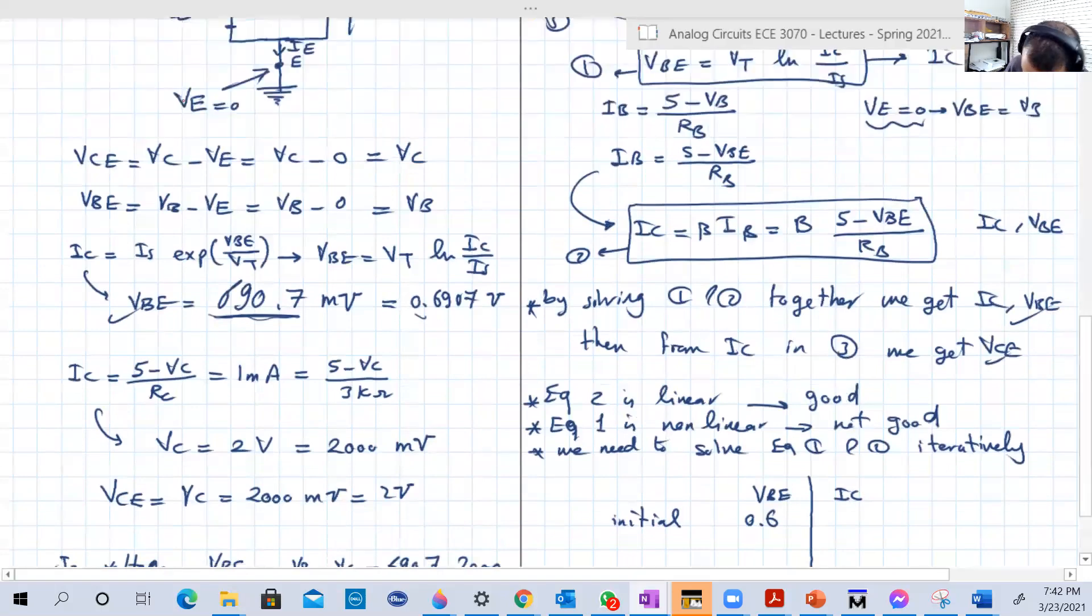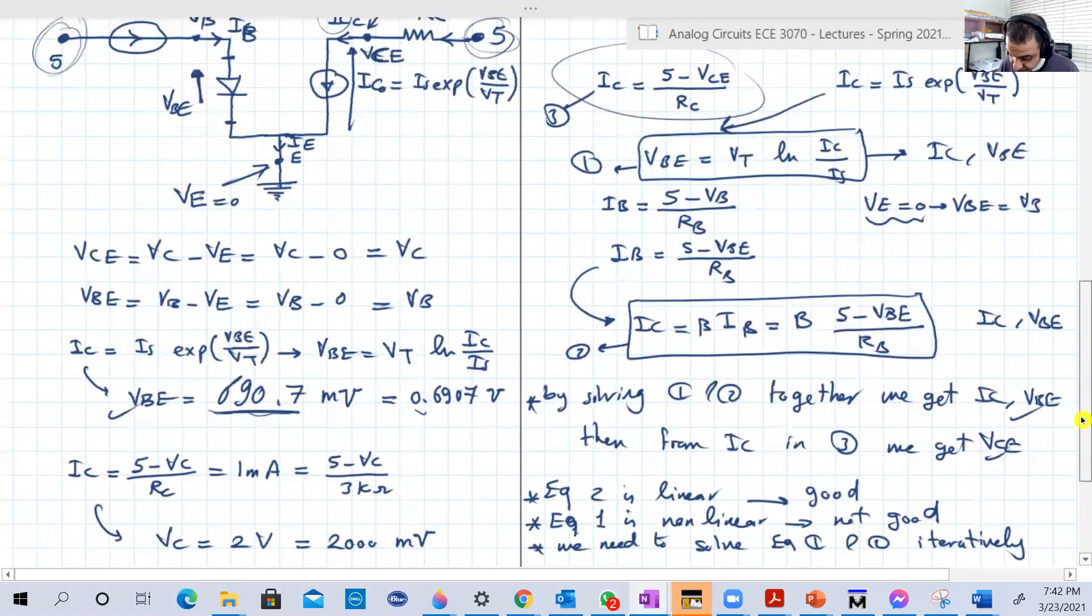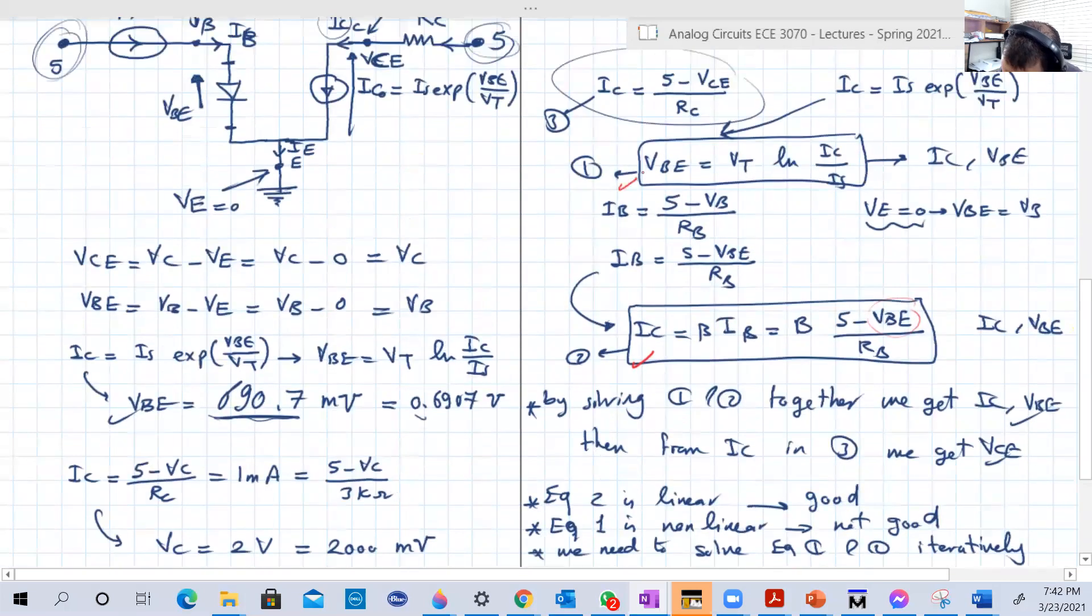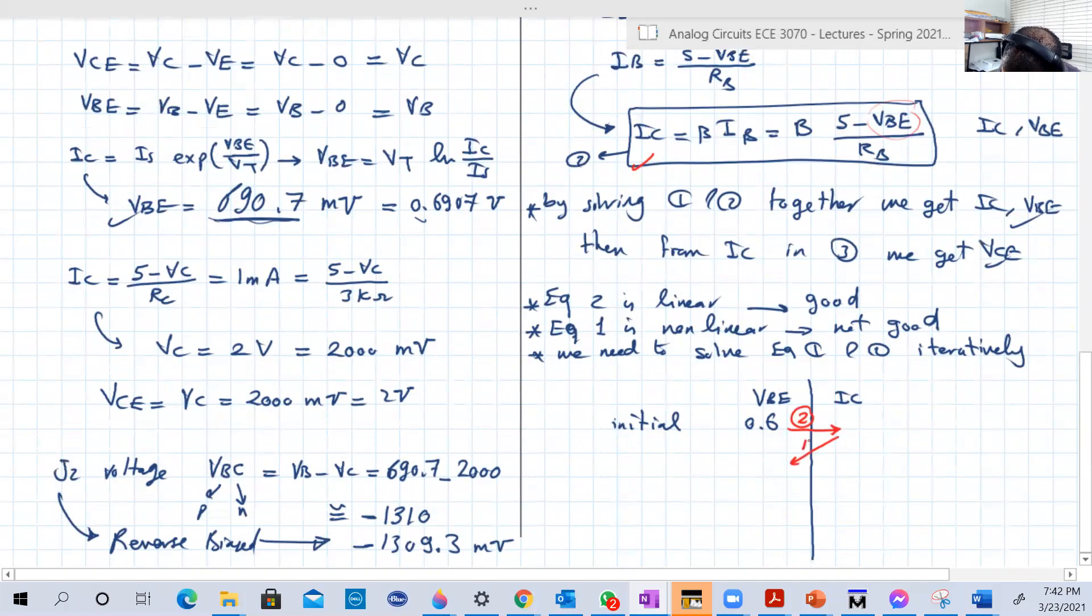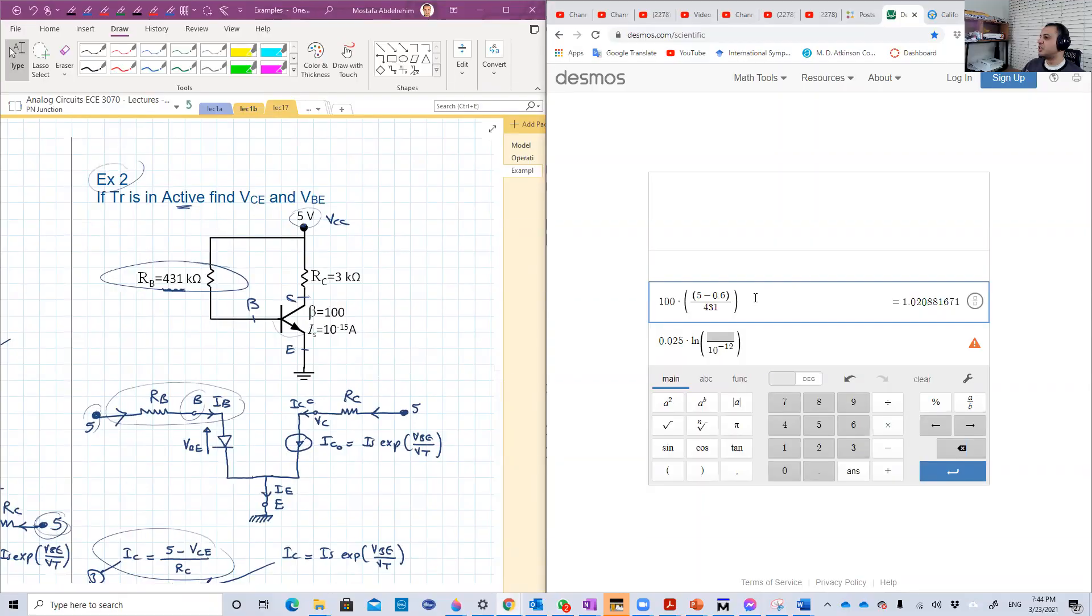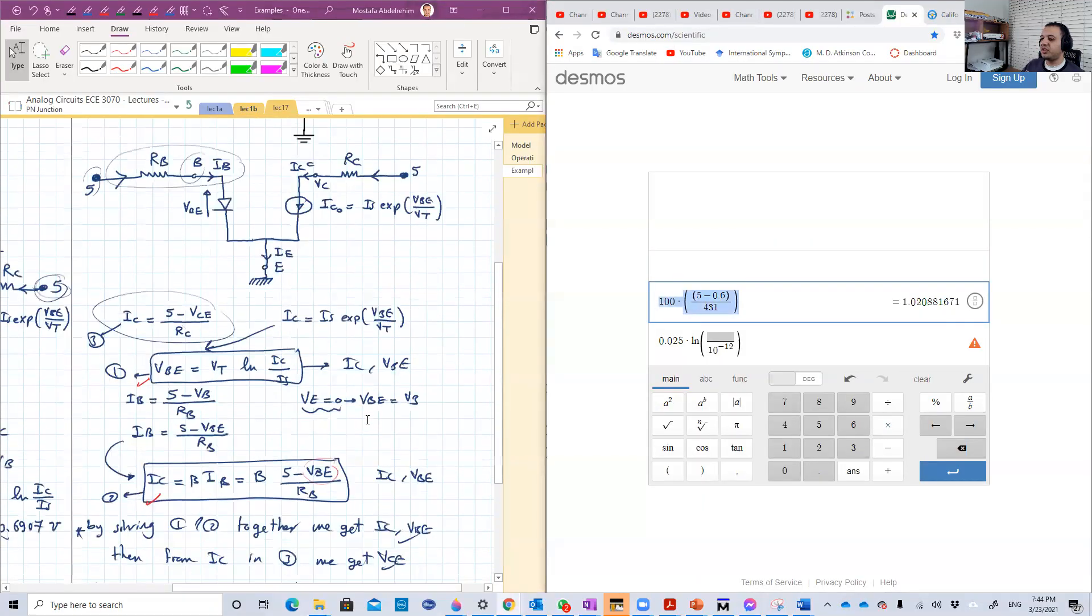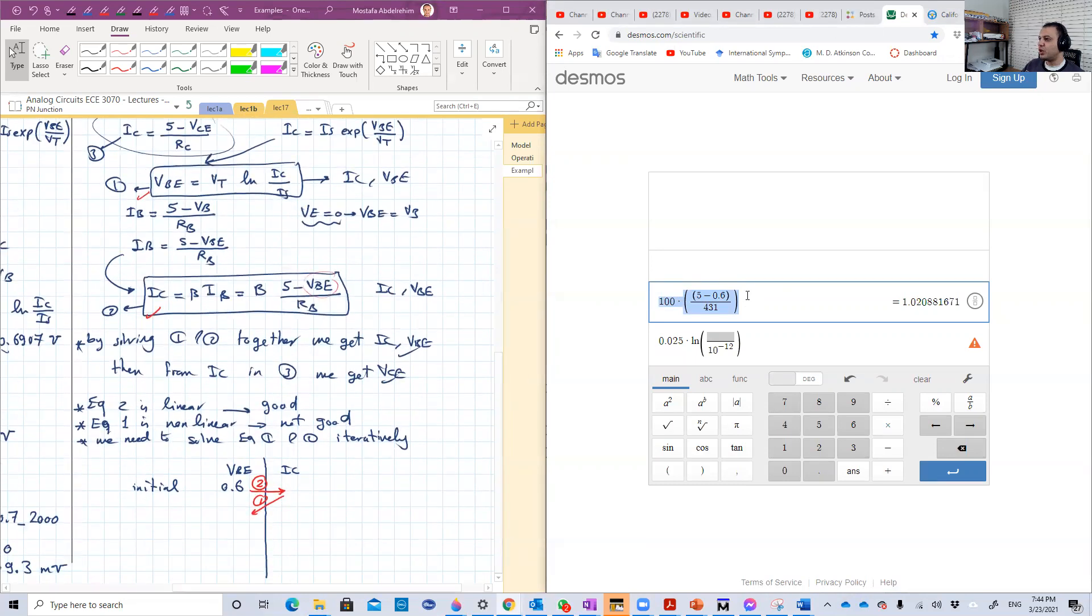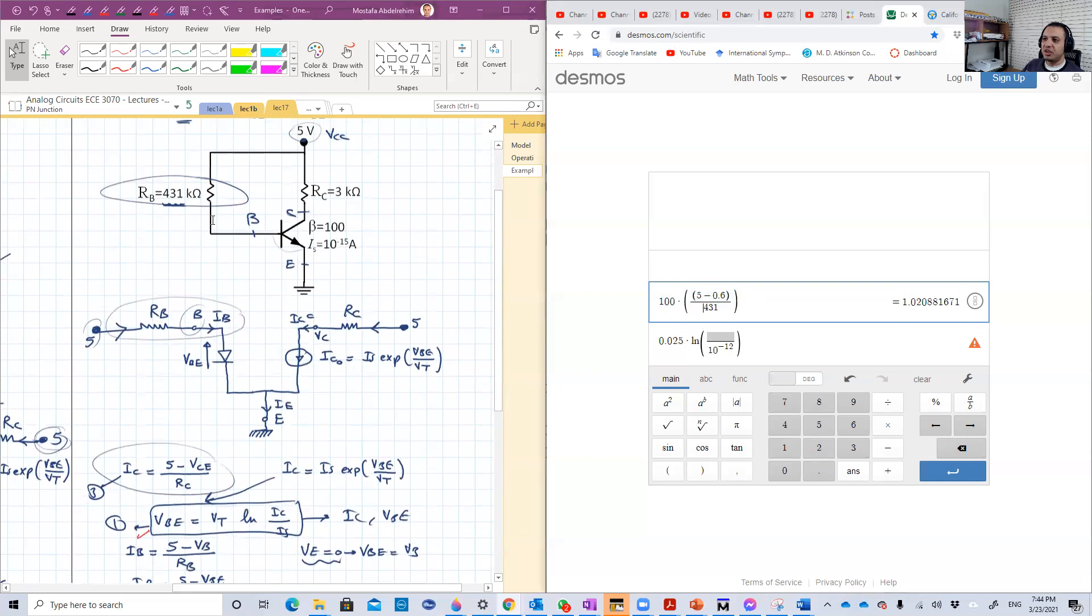So the iteration is like the following. First, we're going to substitute in equation two, this one. So we have VBE 0.6, then we get IC. Once we get IC, we go and substitute in equation one. That would be basically the flow to get the next value of VBE. Then you repeat that, equation two, equation one, equation two, equation one, and so on. So let's do that online using some online calculator. So here is the first equation. Let's look at it. So it's beta 100 multiplied by 5 minus VBE. VBE initial is 0.6 over RB, and RB is 431 kilowatts.